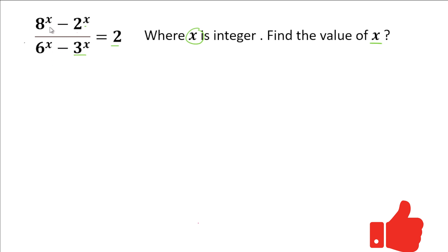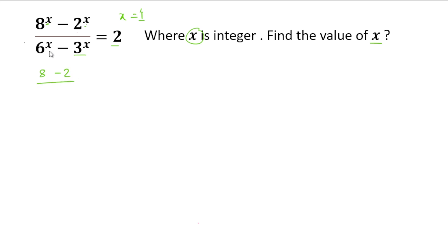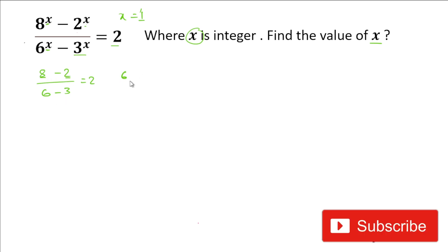Looking at the left-hand side, if we put x = 1, it satisfies the equation: 8^1 = 8, 2^1 = 2, so numerator is 8 - 2 = 6; denominator is 6^1 - 3^1 = 6 - 3 = 3. So 6/3 = 2. That confirms x = 1 is a solution.